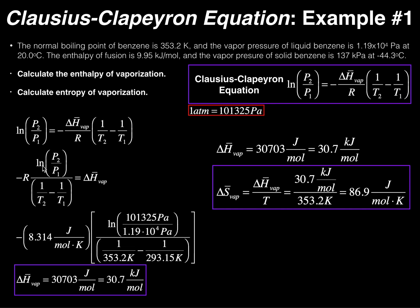Let's identify the pressures. P1 is the pressure of the liquid — for liquids we use vapor pressure. The vapor pressure of liquid benzene is 1.19 × 10⁴ pascals, so that is P1. This is why knowing your initial and final states matters: P1 is the vapor pressure of the liquid, not the gas.